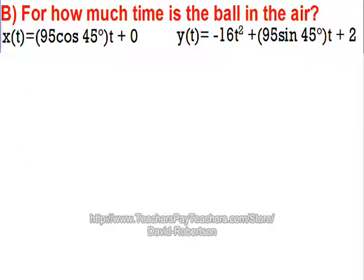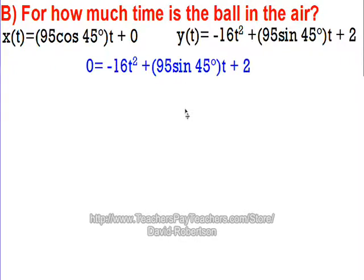Now that we have those equations, let's go ahead and solve some real life questions about the baseball. First, for how much time is the ball in the air? So, since we're talking about the ball being in the air, that's the height. So, let's find the instant when the ball is no longer in the air, that would be a height of zero. So, I'm going to use that y equation, and plug it in right there, a zero in place of the y of t.